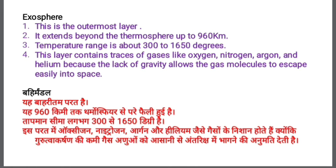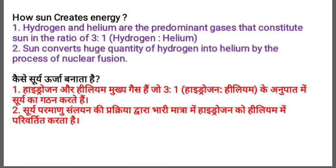The layers of atmosphere are now finished. Our next question in this lecture is: how does the sun create energy? First of all, we should know what the sun is made of. Hydrogen and helium are the predominant gases that constitute the sun. The ratio in which they are present is 3:1 — that is, 3 parts hydrogen and 1 part helium.